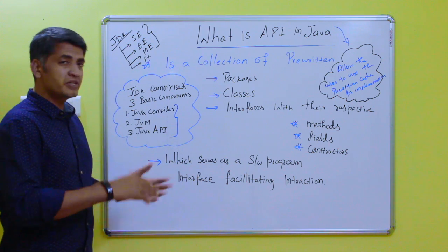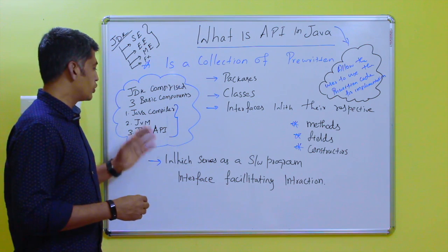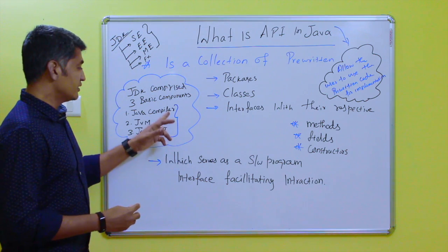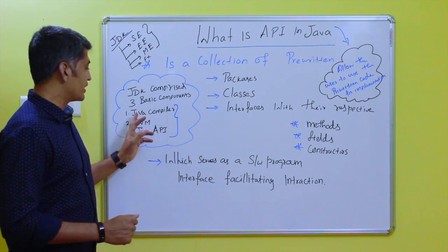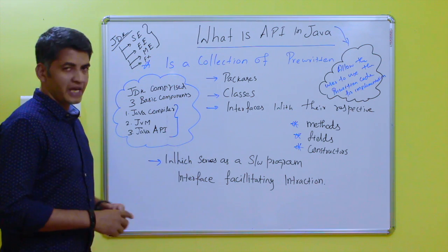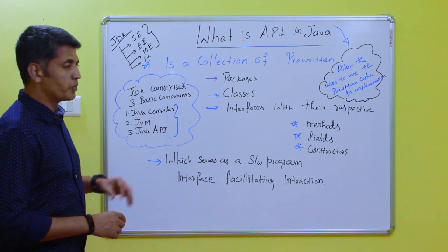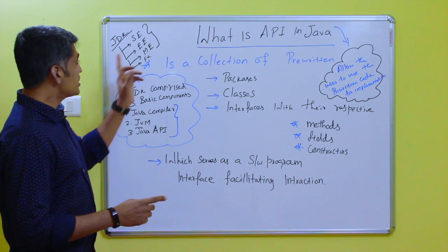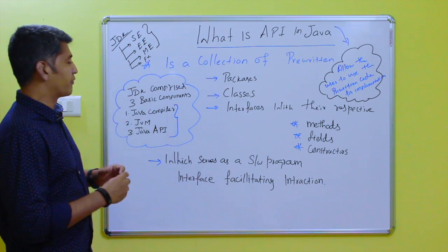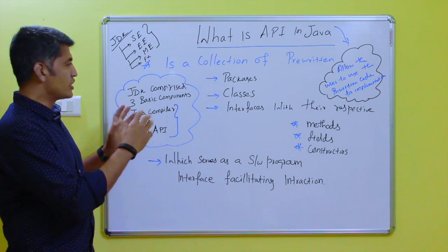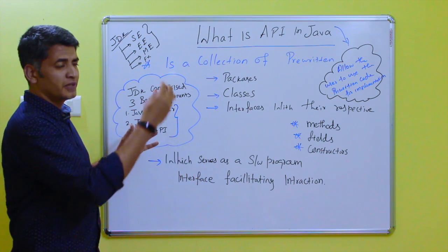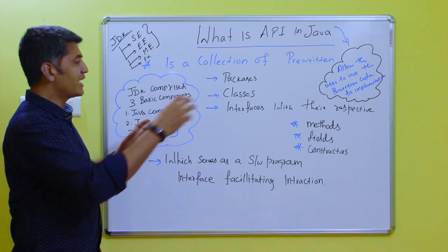In the previous video we already discussed what is JDK and what are the basic components available with JDK. The three basic components are: Java compiler, JVM, and Java API. In each platform there is a JDK attached with that platform, and JDK comes with a combination of JVM and the API.